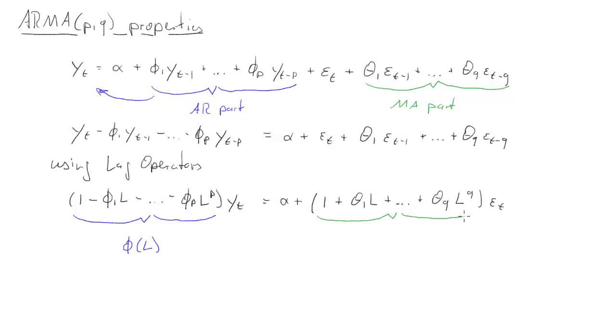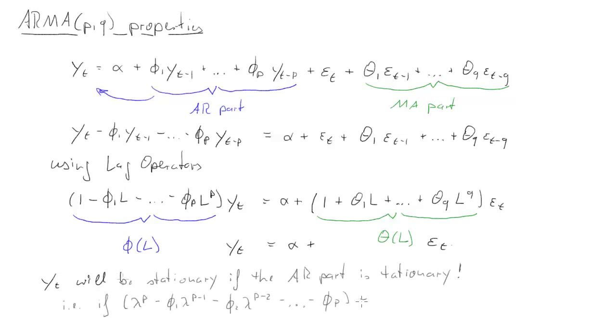What we call a lag polynomial, and the same on the right-hand side, the lag polynomial for the error terms, we call that theta(L). And then we can represent this ARMA(p,q) process in a fairly short form, phi(L) times y_t equals alpha plus theta(L) times epsilon_t. All of this is just new notation, or hopefully not so new, you may have seen the lag operator before.